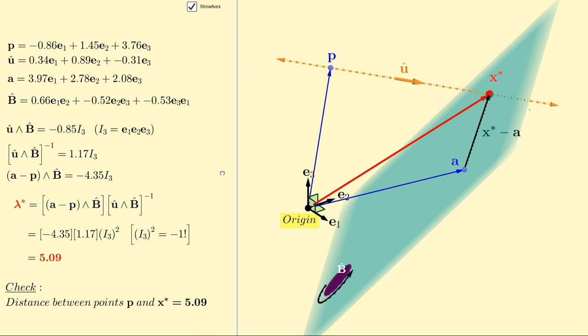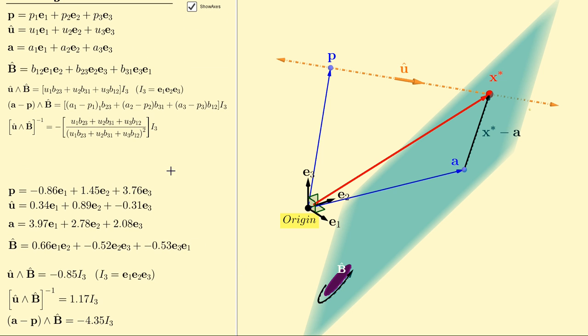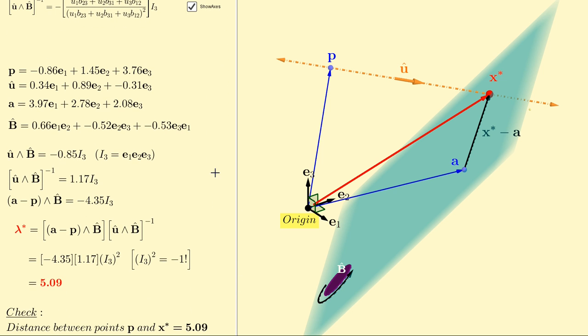When we work all this out here, according to the formulas that we just saw a moment ago, we end up with u hat wedged with b hat is negative 0.83 times i3.